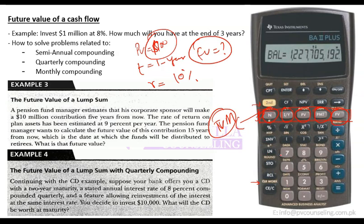Do not press N again when you see any other number on the screen — just press clear and come back. For I/Y, press 10 on your screen. Make sure you put it in percentage terms, not in decimal — your calculator knows you are inputting in percentage. Press 10 and then press I/Y, and this 10 gets stored into I/Y.